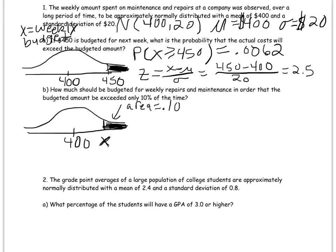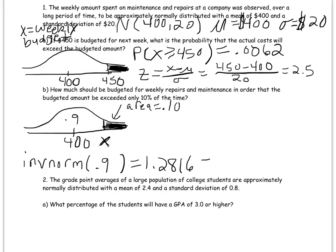I'm going to use the inverse normal function, which is under Second, VARS, option 3: inverse norm. The calculator reads from left to right, so I need to plug in how much area is to the LEFT of my particular X value, which is 0.9. That gives me a Z-score of 1.2816. Now I just need to take that Z-score and find the corresponding X value.